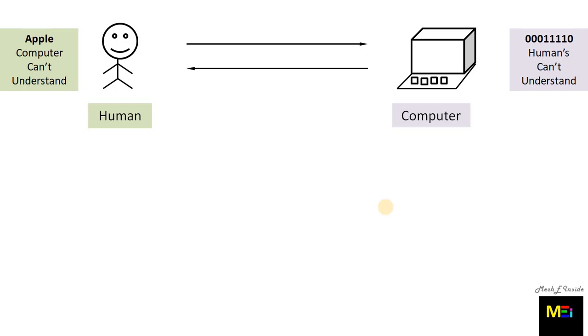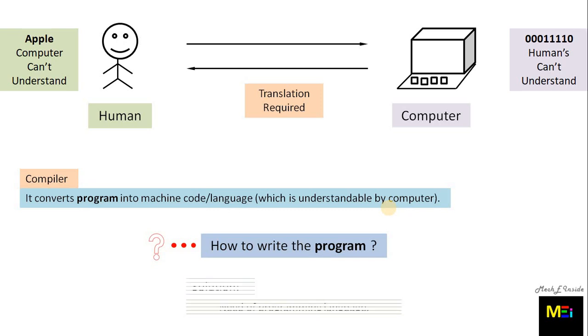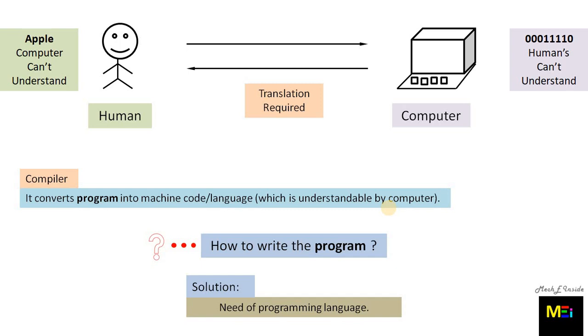So, for that case, you are required a translator. Similar, in the communication of human and computer, there is a translation required. That translation is done with the help of compiler. Compiler converts program into machine code or language, which is understandable by computer. Now, the question is still there, how to write the program or how to write the sequence of steps, as the above mentioned are not valid steps for communication. The solution is, here is the need of a programming language.